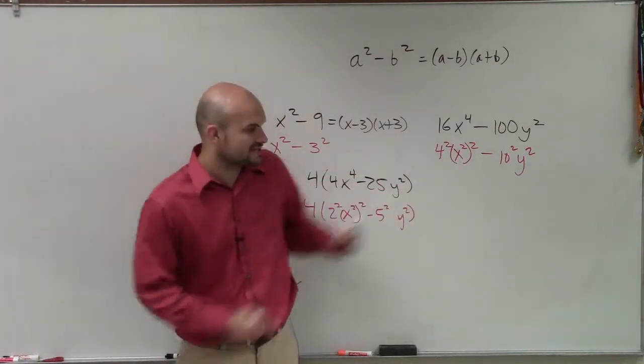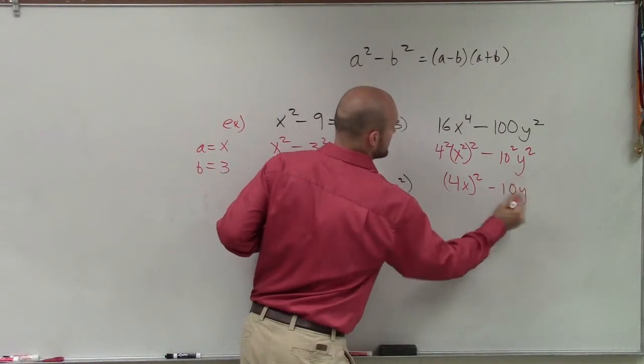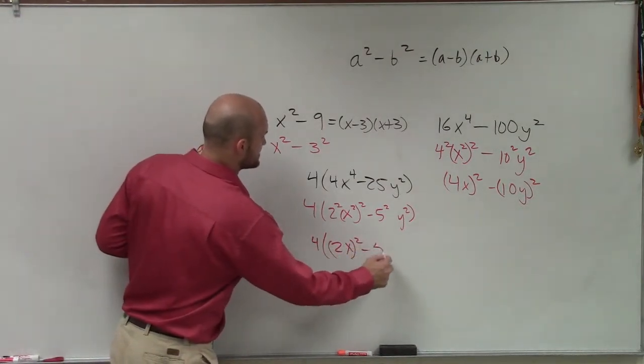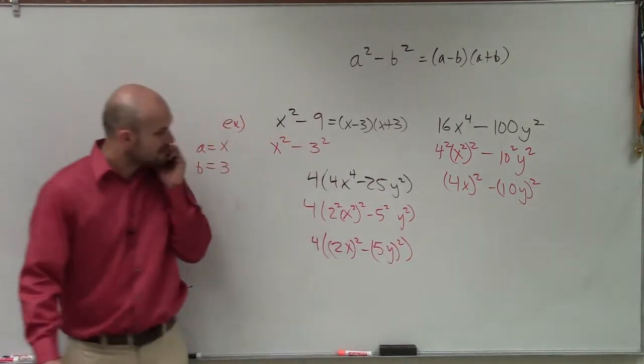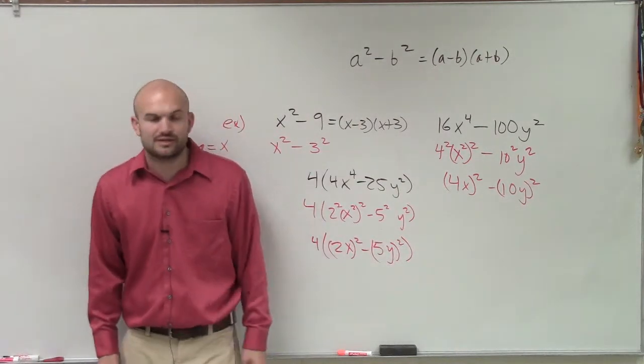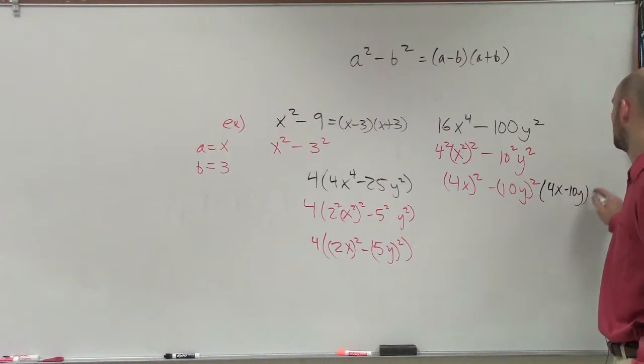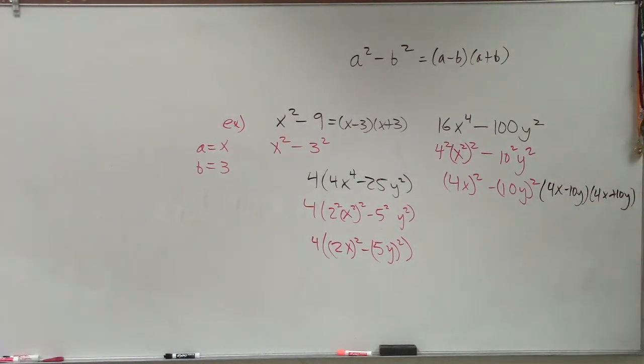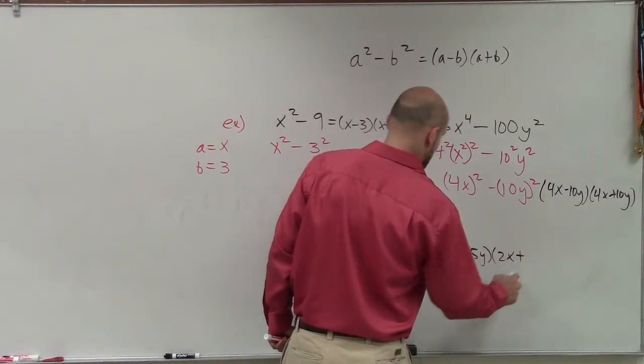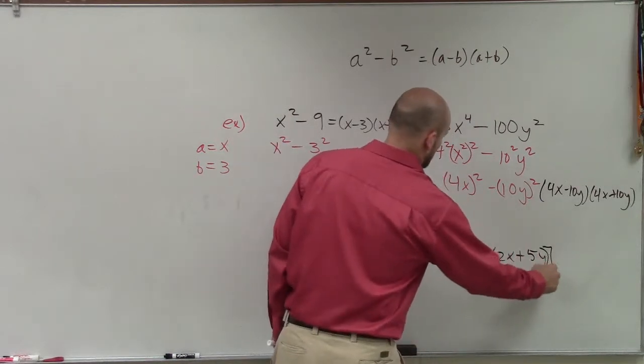All right? Now, either way, ladies and gentlemen, what I want you to understand is we can break this up into 4x squared minus 10y squared. Over here, you could break this up as 4 times 2x squared minus 5y squared squared. And I'm doing it just two different ways. It doesn't really matter. The only difference is this is just all being multiplied by 4. And this one, you have to factor out a 4. But now you guys can see that if I want to solve this out, it's just going to be 4x squared minus 10y times 4x squared plus 10y. This would be 4 times 2x minus 5y times 2x plus 5y.